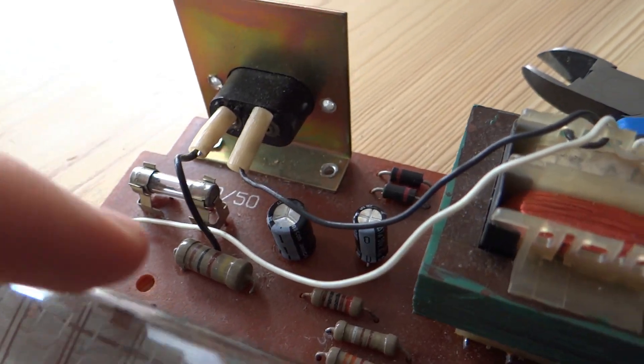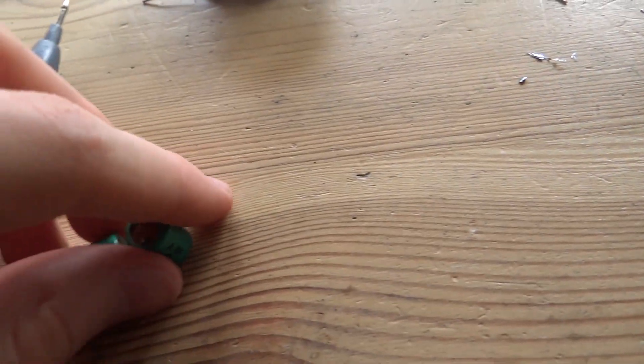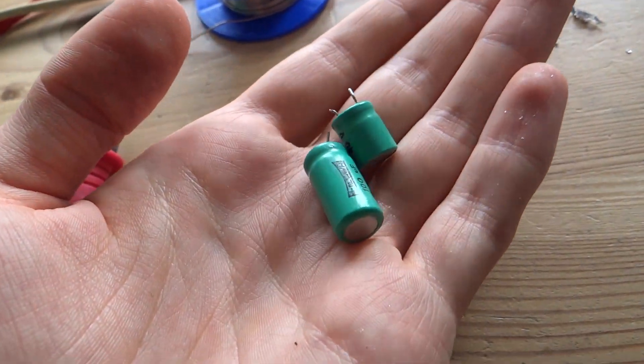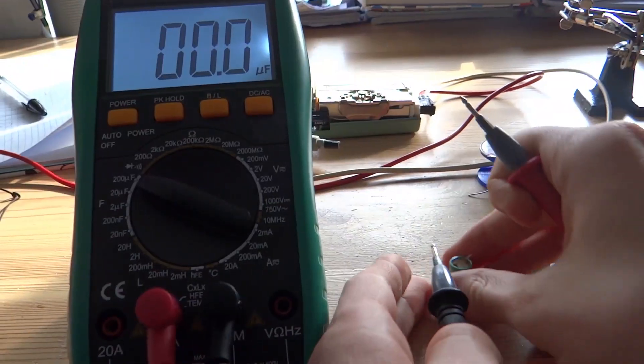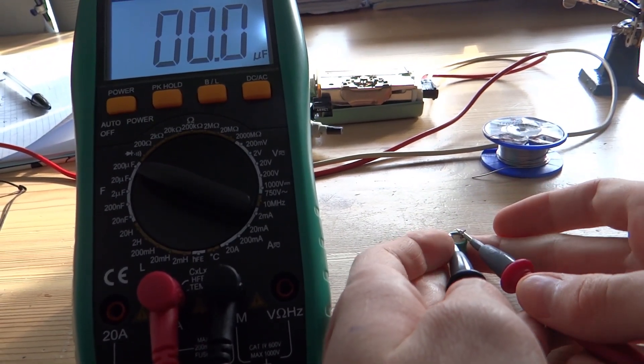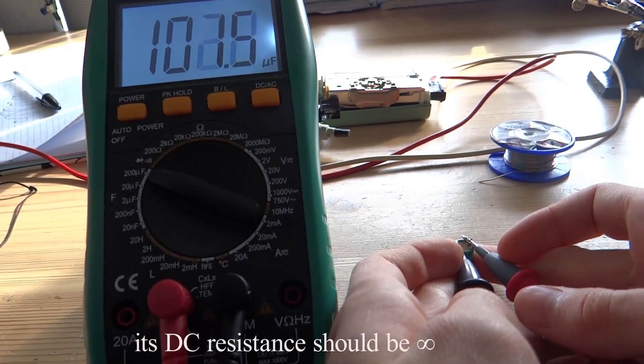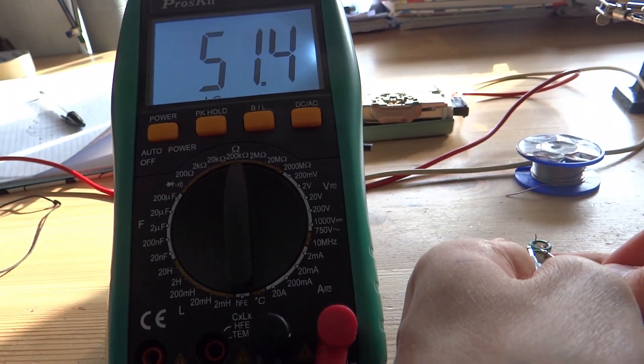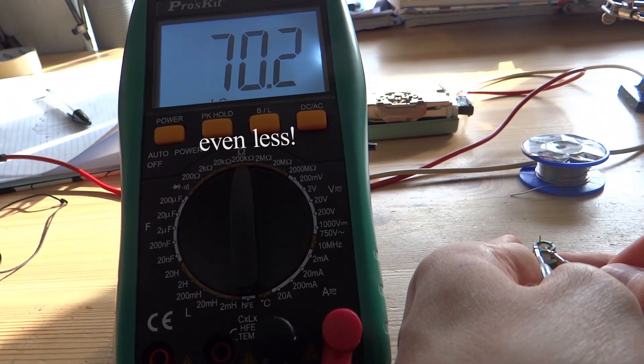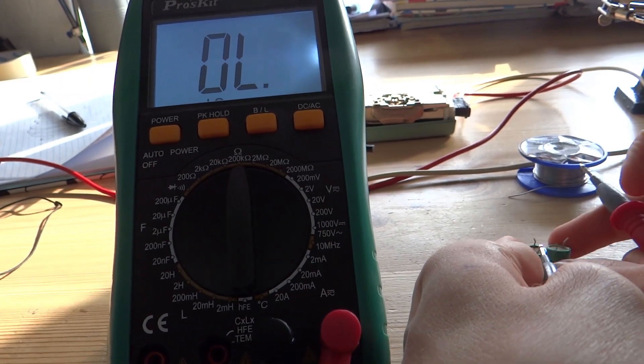Later I decided to replace the caps as I thought that those may be rotten. Let's see if that was actually true. As you can see, the capacitance measures about right. Let's see if it's leaking any DC though. And here we go, a hundred kilo ohms across the cap. That's really bad, so I'm glad I replaced it.